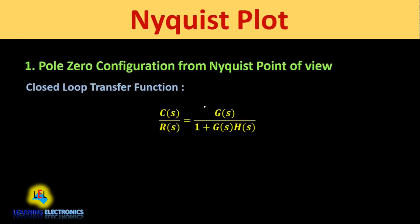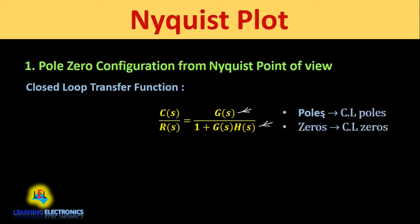Now we will consider the closed loop transfer function, which is given by C(s)/R(s) = G(s) / [1 + G(s)H(s)]. This equation is for a negative feedback control system, where G(s) is the forward path transfer function and H(s) is the feedback path transfer function. When we find out poles from this closed loop transfer function, those poles are called as closed loop poles, and when we find out zeros they are called as closed loop zeros.